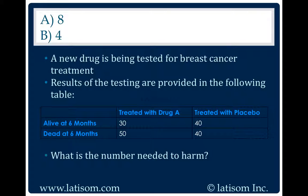The number needed to harm is eight. The number needed to harm equals one divided by the attributable risk. The attributable risk equals the event rate in the treatment group minus the event rate in the placebo group. Therefore, attributable risk equals 0.